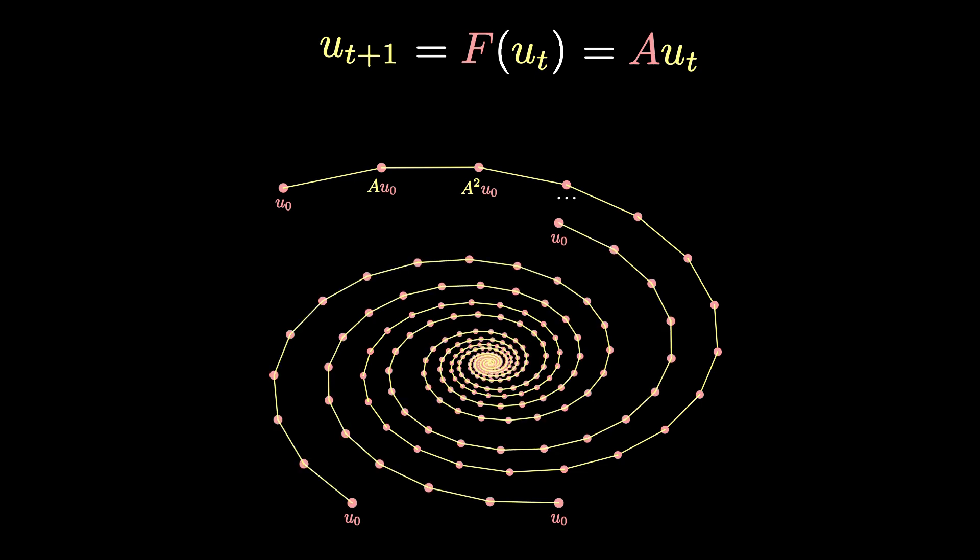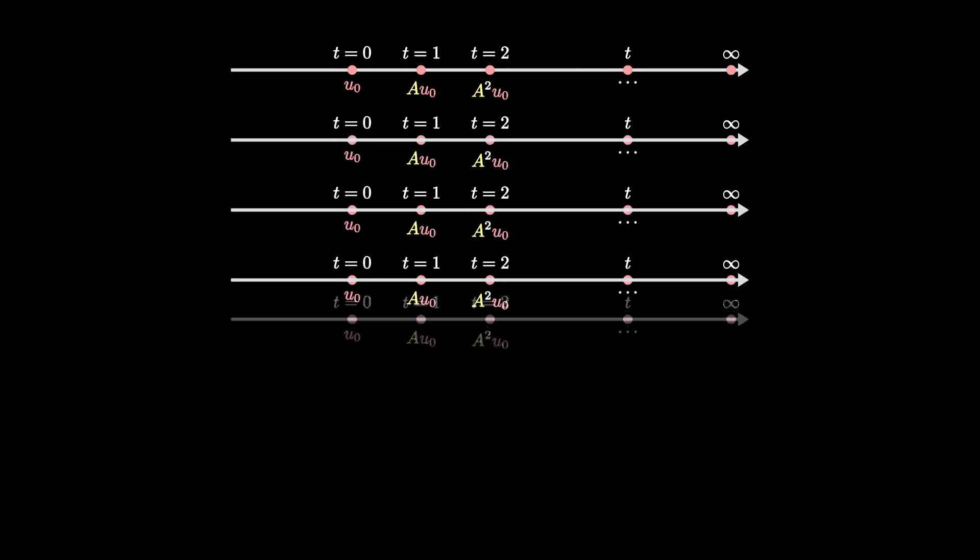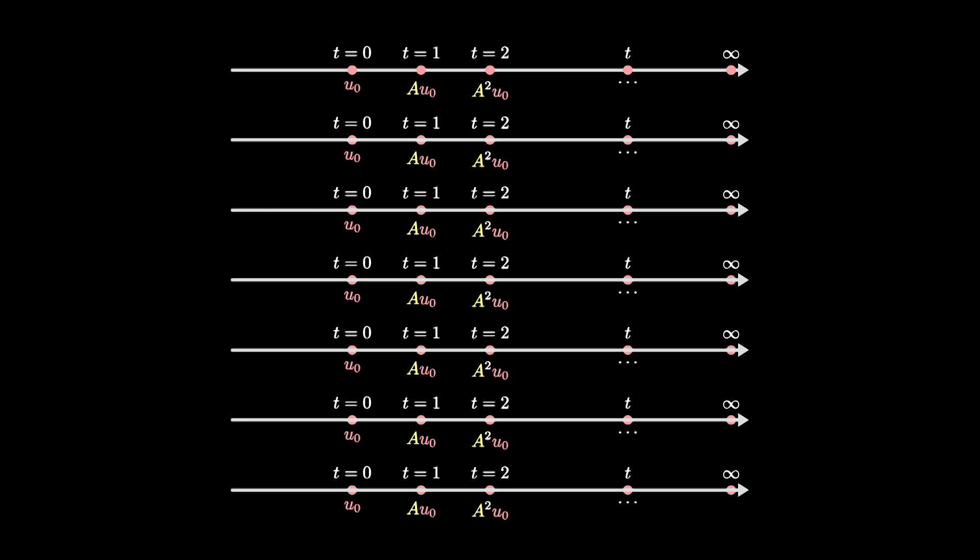If you pause for a moment and try to think about how you would decide something like this, how would you decide whether a given linear dynamical system is stable or not, two difficulties that have to do with infinity will arise. First, to show convergence of these sequences, we need to consider infinitely many time steps t. And second, we need to consider all possible starting states u0. It makes you wonder if there is even an algorithm that takes the matrix A as input and returns in finite time whether the associated dynamical system is stable or not.